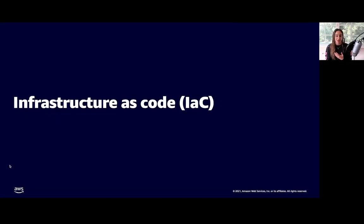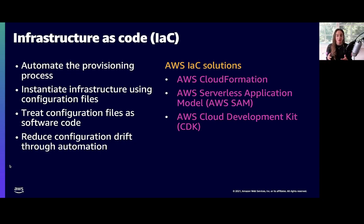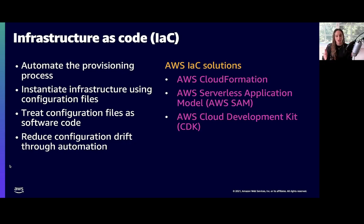So to solve this problem, we look outside the console to templates — and that brings us to infrastructure as code. Templates are a way to store our infrastructure so that it can be reusable. With infrastructure as code, you're automating the provisioning process. You're going to use a tool called SAM, which we'll talk about in a minute, and that's going to deploy all of your resources. Basically, we're instantiating infrastructure using configuration files — a template with all the steps and configurations for your application that you can reuse whenever you need. And so this allows you to treat those configuration files as code — hence, infrastructure as code.